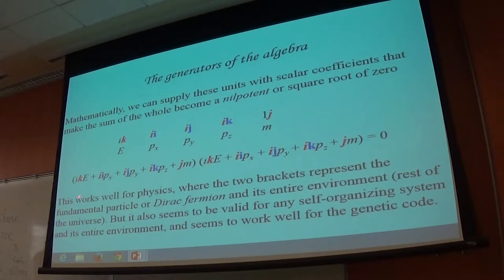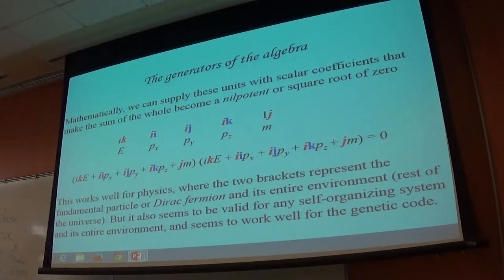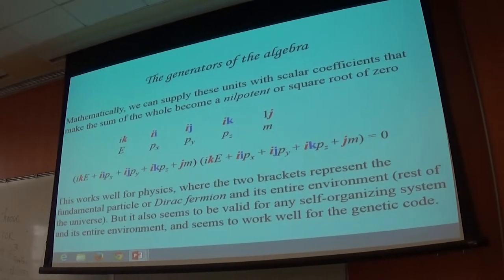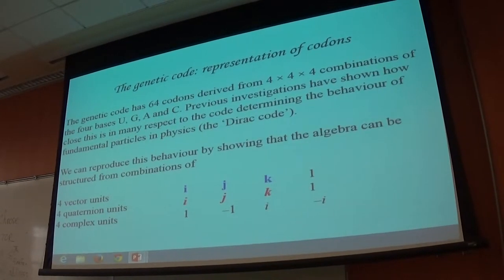We can even do better in physics, because we can do a canonical quantization of these and make this into a version of the Dirac equation, just in two lines. The two brackets represent the fundamental particle in physics — that bracket represents the fundamental particle, and that represents its entire environment, or the rest of the universe. But it's really valid for any self-organizing system and its environment, because they all work on the principle of two spaces, one of which is distorted. It does seem to work for the genetic code, which again has 64 units, just as the Dirac algebra has 64 units.